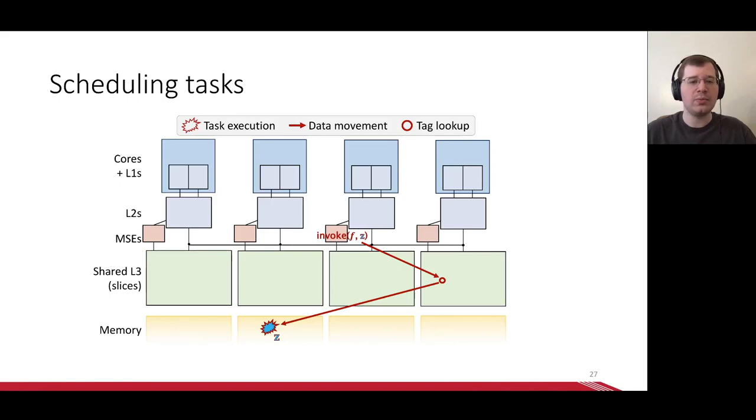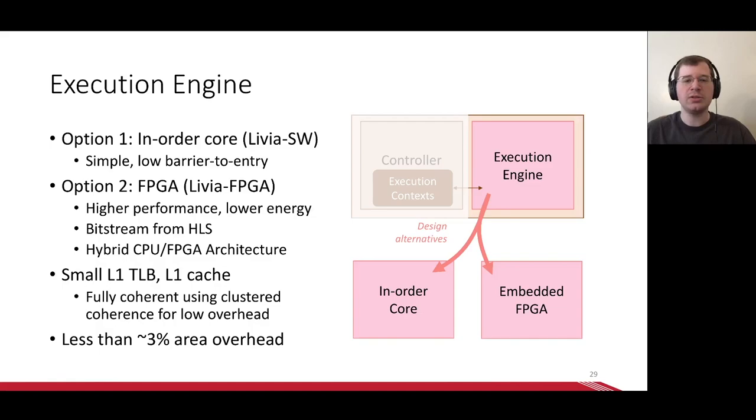So we've seen how Livia can migrate execution to data, but if it did this every time, there would be no way to bring data into the caches so that we could exploit locality. Therefore, at each step in the scheduling process, with a small probability epsilon, we choose to execute a task even without data, bringing the data into the caches. Let's see how this works. Same scenario, Z is in the second tile's NUMA domain, and the third tile's engine executes an invoke instruction on Z. It forwards the request to Z's home L3 slice, but now, with a small probability, it'll execute the task even without data, loading the data into the cache. We find that in the steady state, the simple stateless policy does a good job of approximating the ideal data layout for our irregular workloads. So that's the gist of how Livia schedules tasks and brings data on chip. For more information on the corner cases, please see the paper.